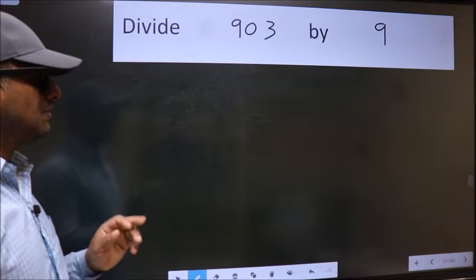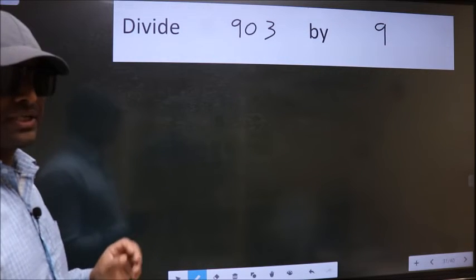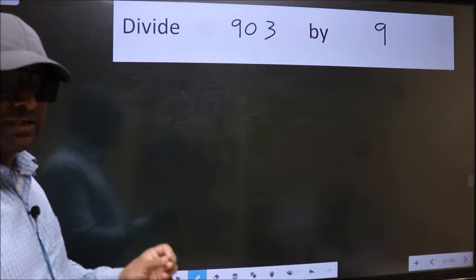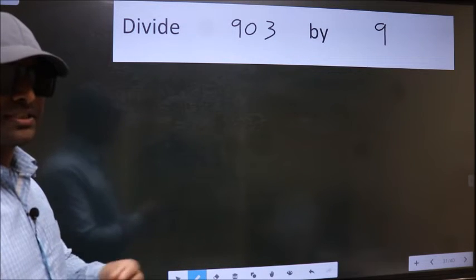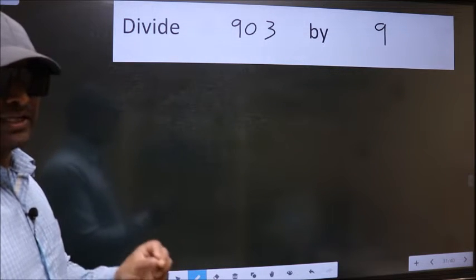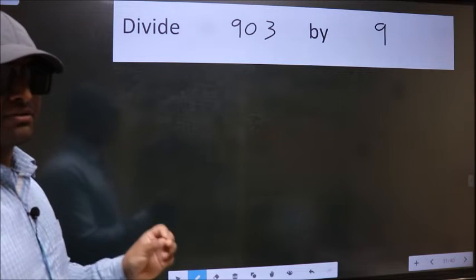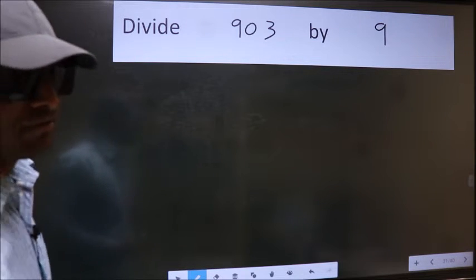Divide 903 by 9. While doing this division, many do this mistake. What is the mistake that they do? I will let you know. But before that we should frame it in this way.